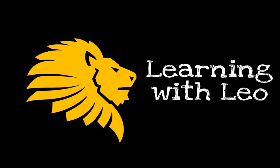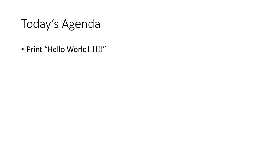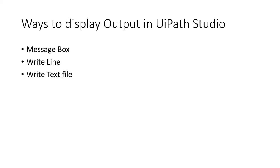Hello everyone, welcome to my channel. Today we are going to discuss how to print a Hello World statement in multiple ways in UiPath Studio. Today's agenda is printing the Hello World statement. There are three ways to display output in UiPath Studio: Message Box, Write Line, and Write Text File. We are going to see each and every activity.